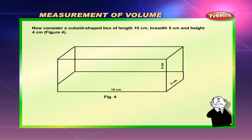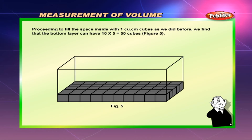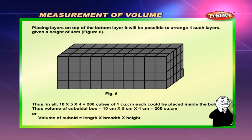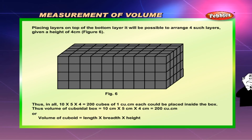Now consider a cuboid-shaped box of length 10 centimetres, breadth 5 centimetres, and height 4 centimetres. Proceeding to fill the space inside with one cubic centimetre cubes as before, the bottom layer can have 10 into 5, which equals 50 cubes. Placing layers on top, it is possible to arrange four such layers given a height of four centimetres. In all, 10 into 5 into 4 equals 200 cubes of one cubic centimetre each. Thus, the volume of the cuboid box equals 10 cm × 5 cm × 4 cm = 200 cubic centimetres. Or: volume of cuboid equals length into breadth into height.